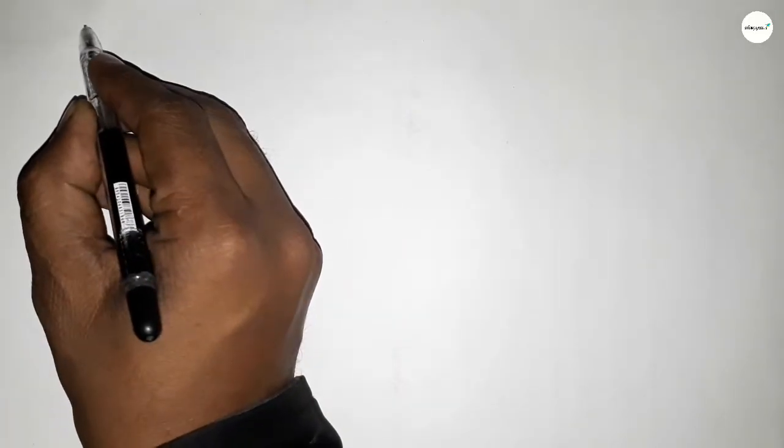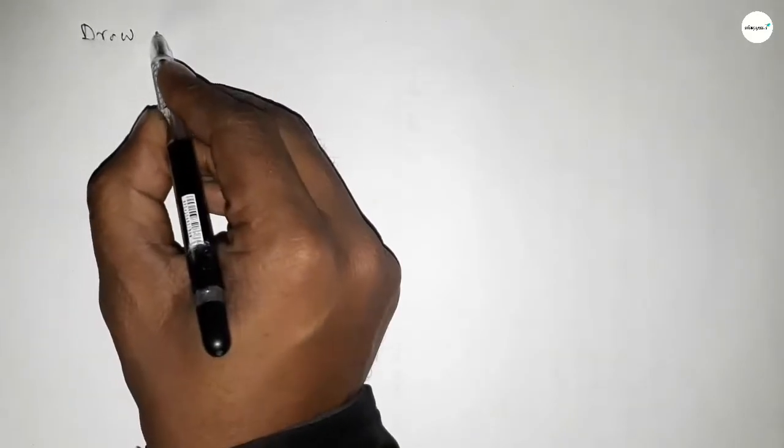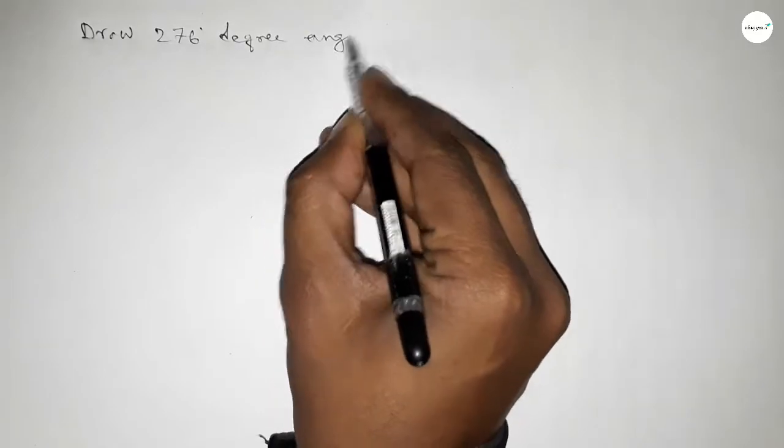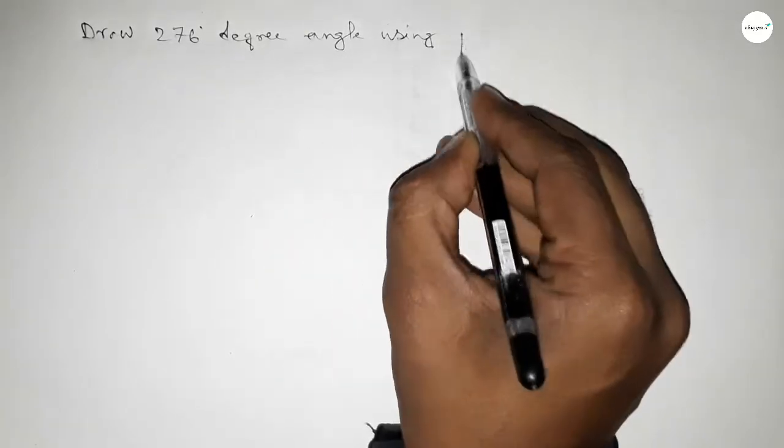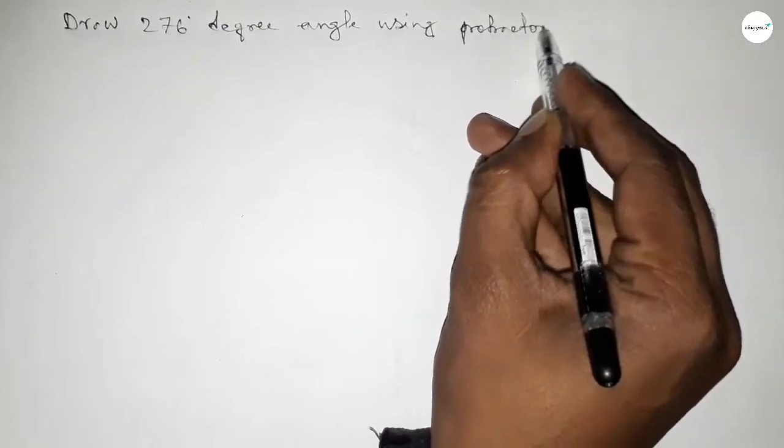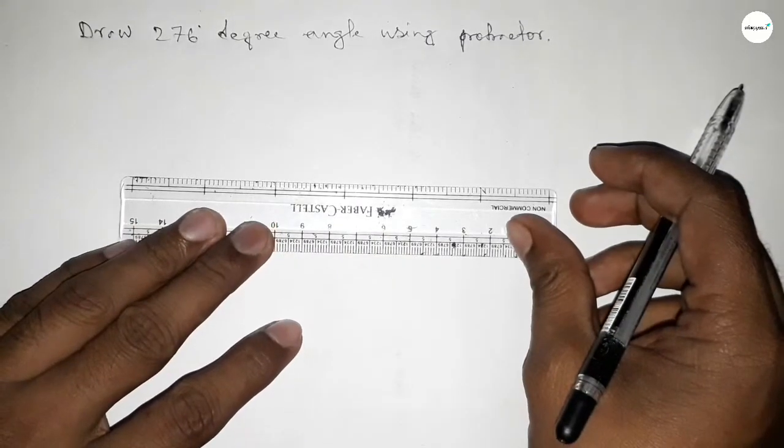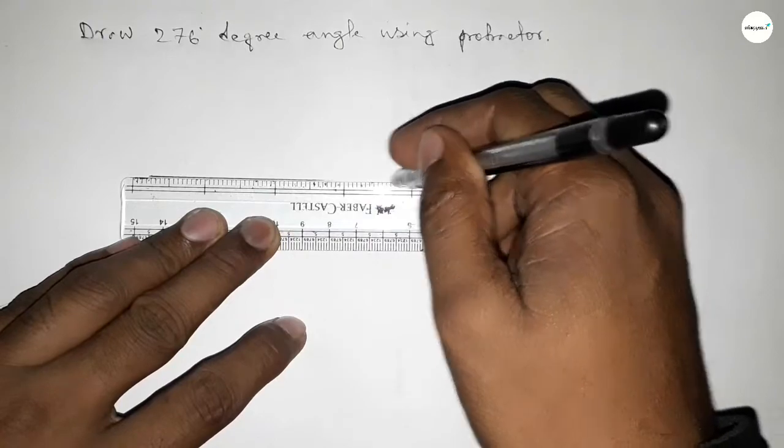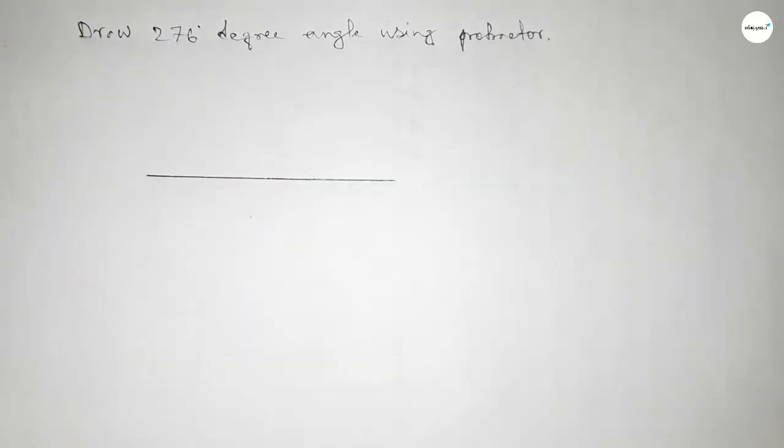Hi everyone, welcome to SSR Classes. Today in this video we have to draw a 276 degree angle by using a protractor. So let's start the video. First of all, we have to draw here a straight line of any length.